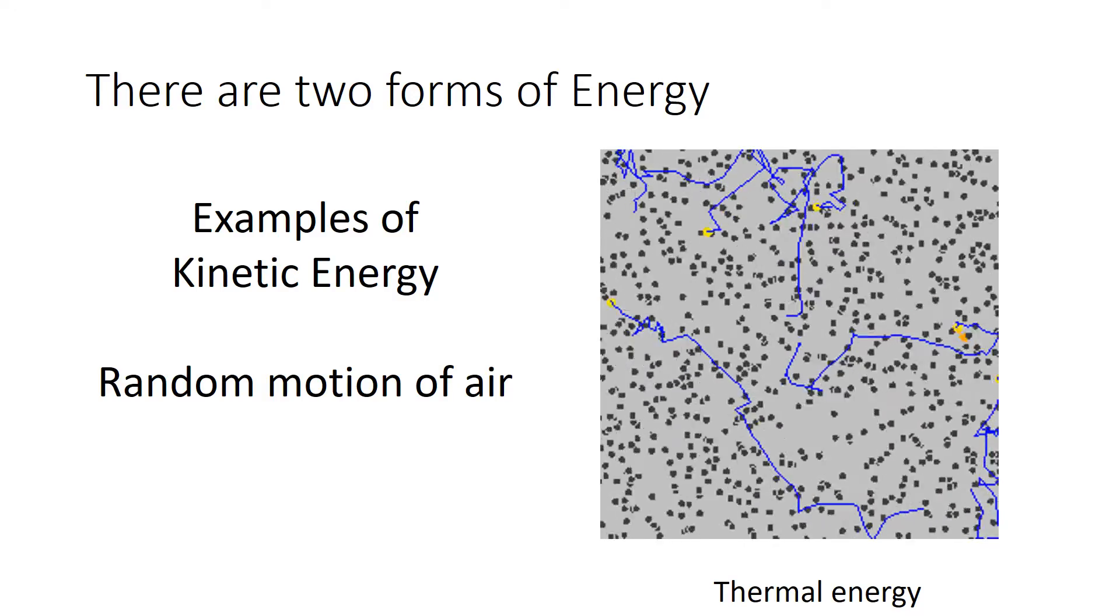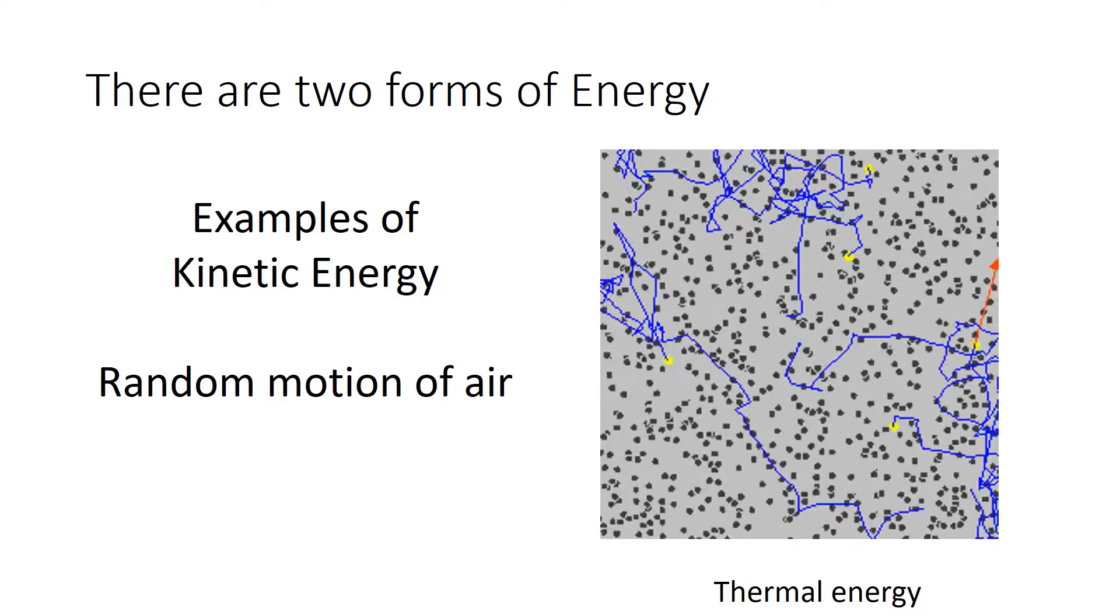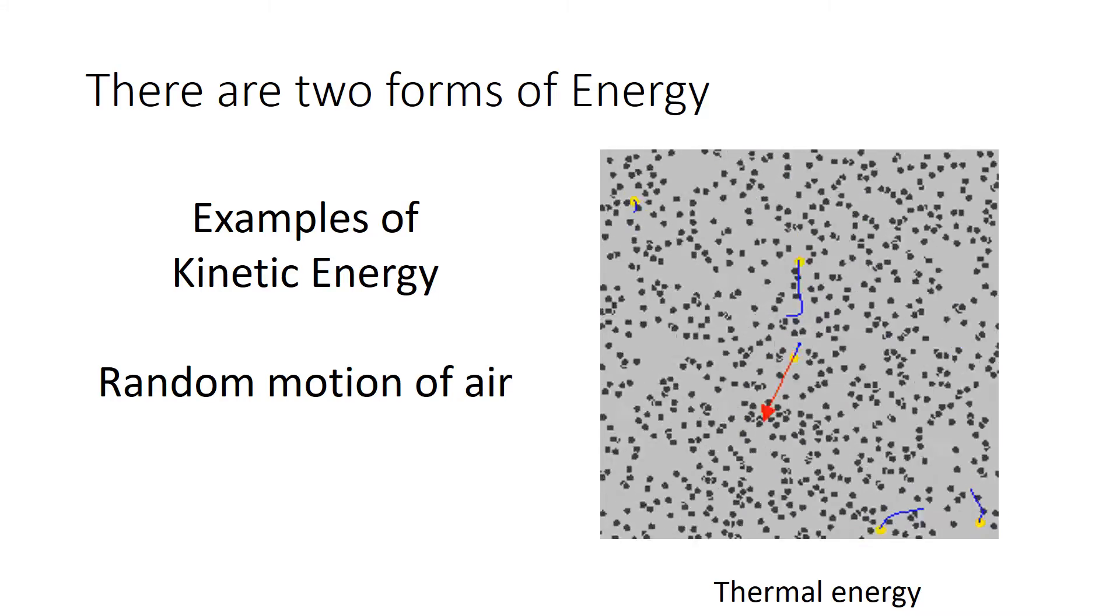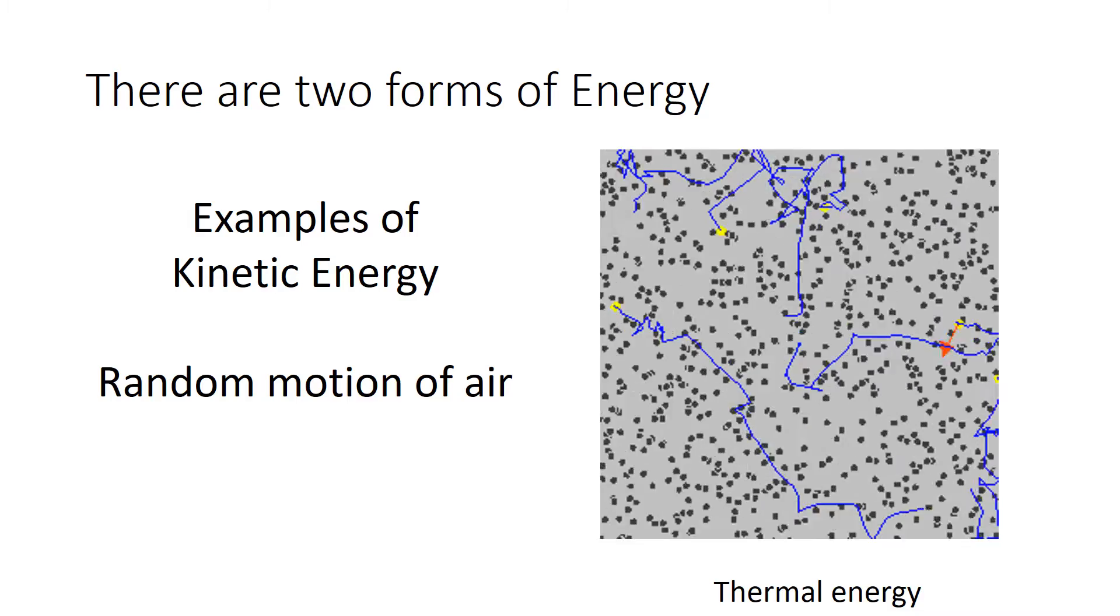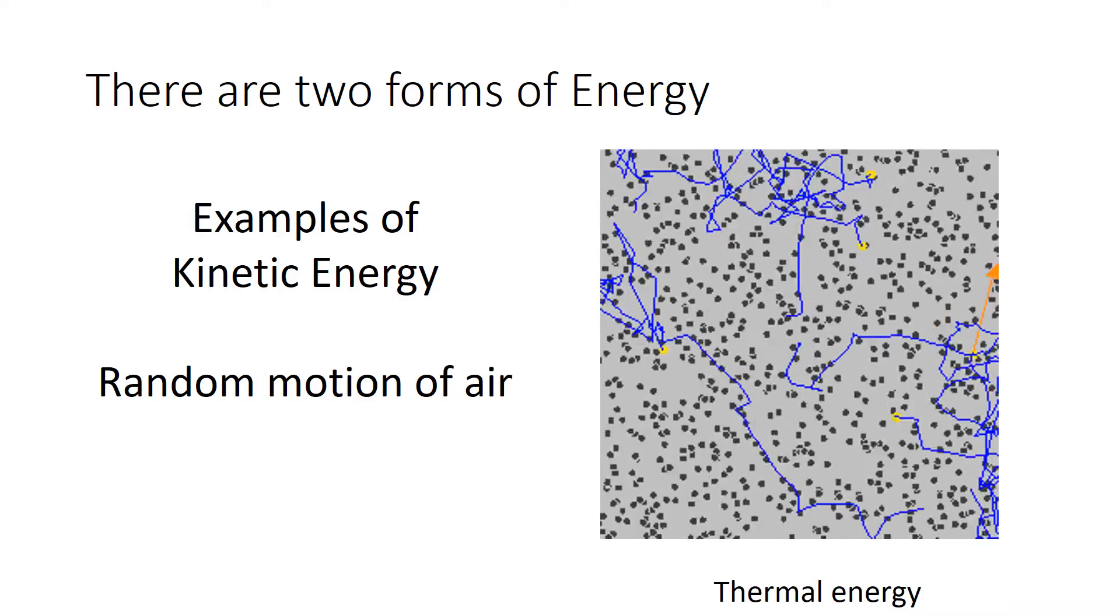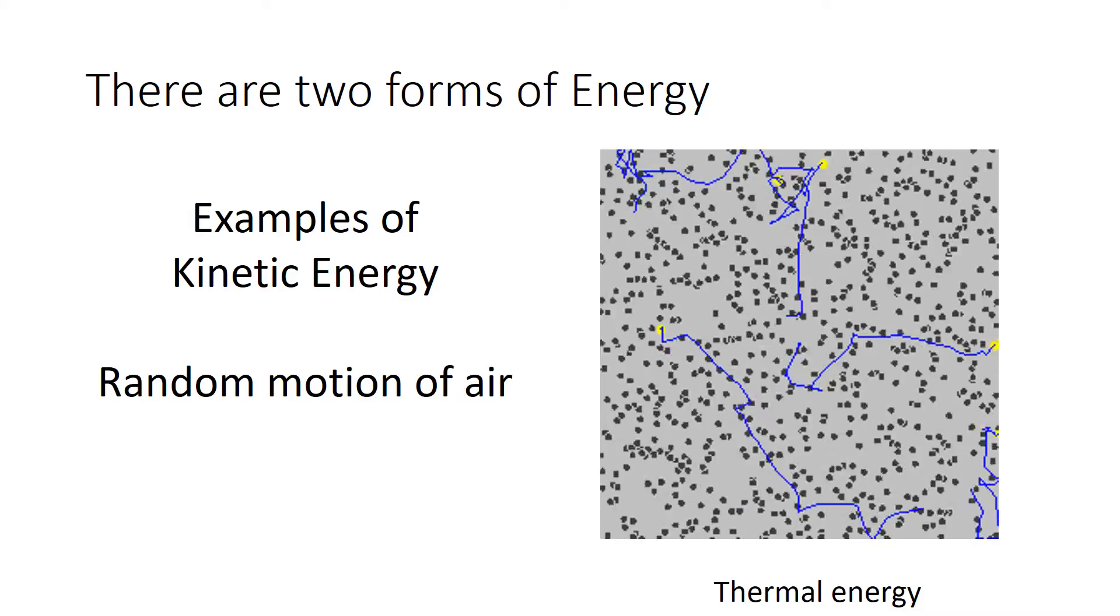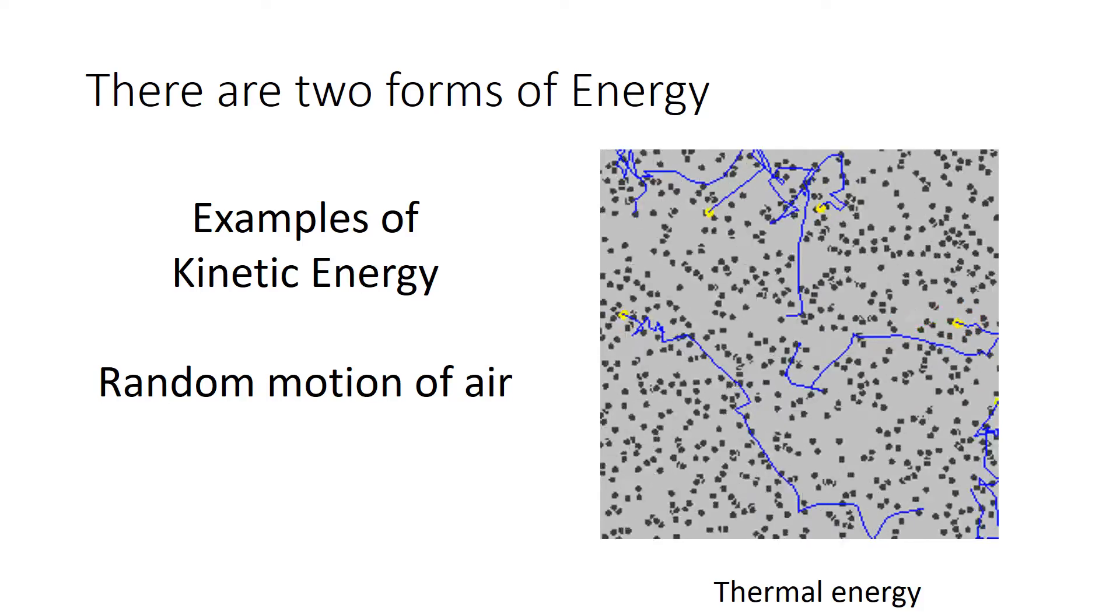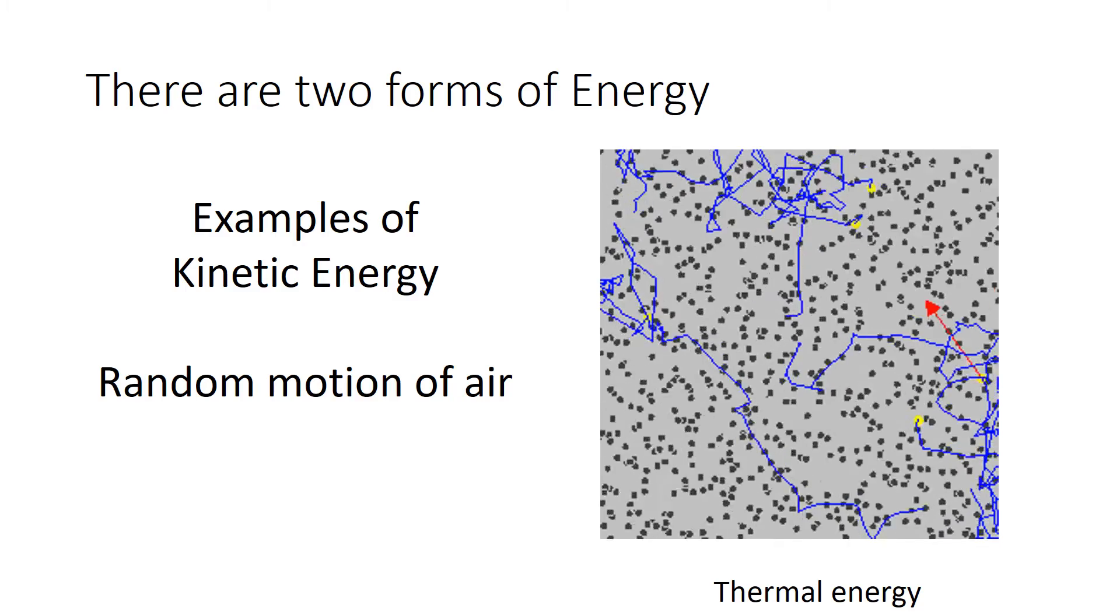Another example of this thermal energy would be the random motion of air. Air particles are actually moving around quite rapidly. And the hotter they get, the faster they move. But we can't use it to do any work because the air particles are moving in very random motions. Now if it becomes windy, that's a different matter. And all the wind particles would, in that case, move in one direction.